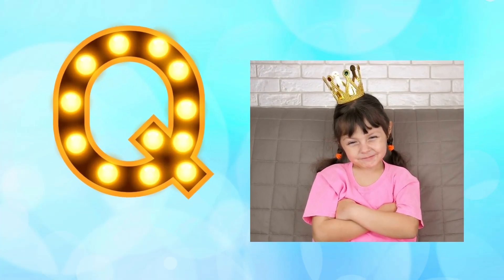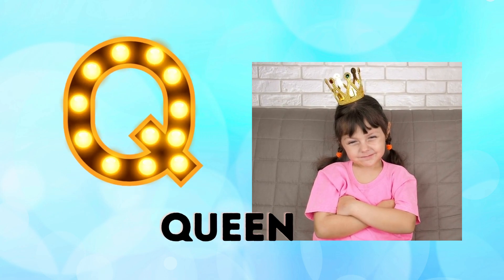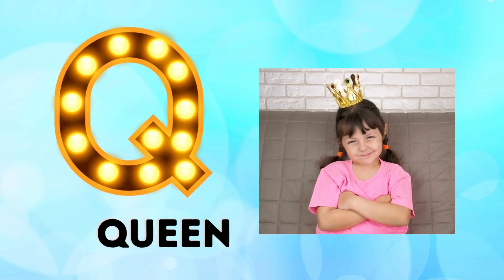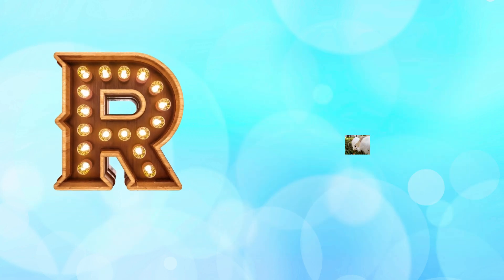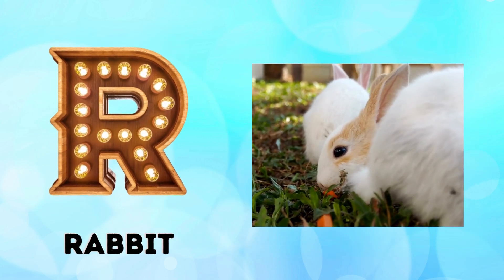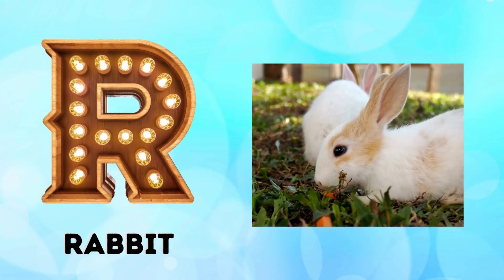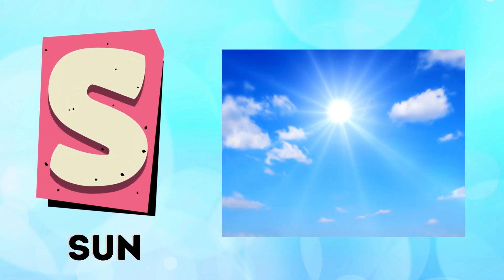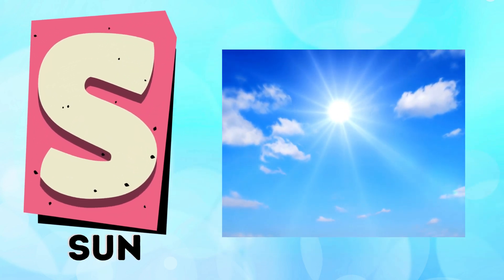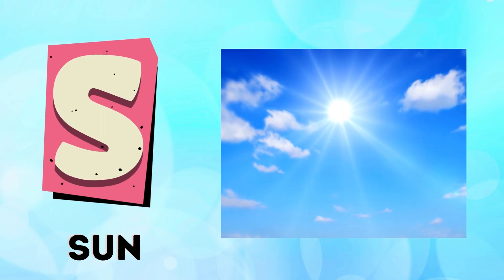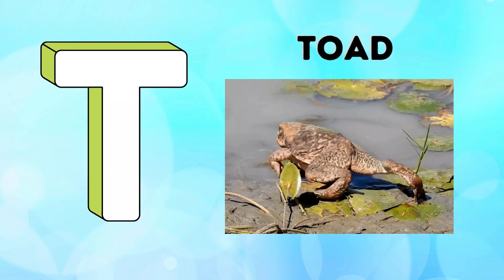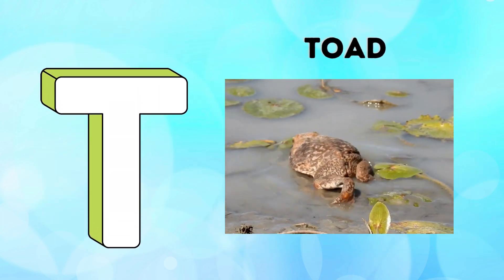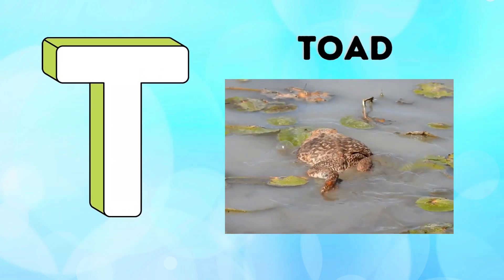Q is for queen, k-k-queen. R is for rabbit, r-r-rabbit. S is for sun, s-s-sun. T is for toad, t-t-toad.